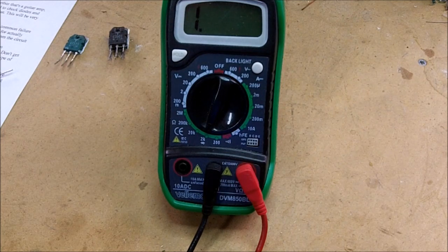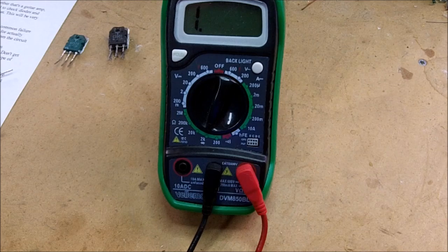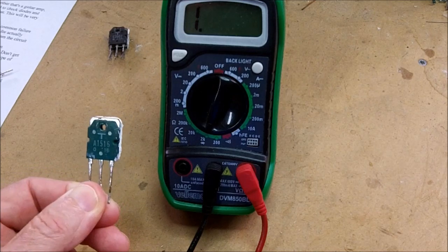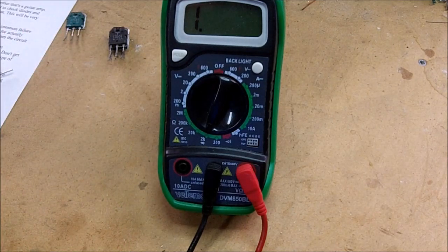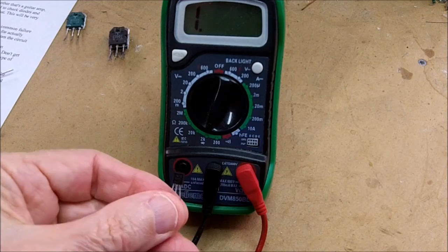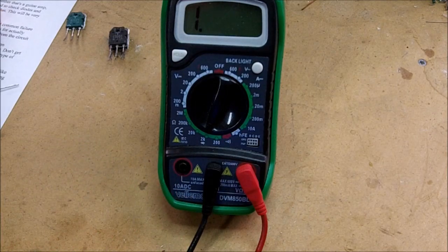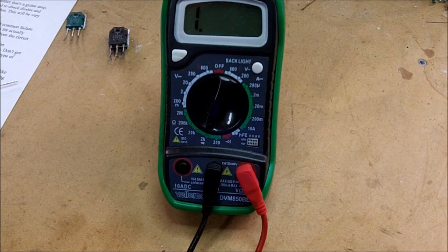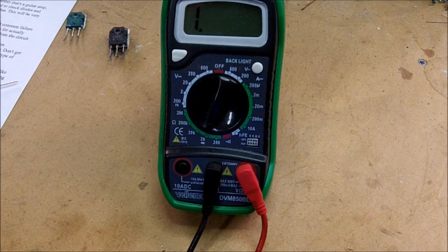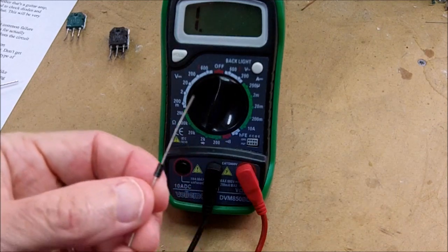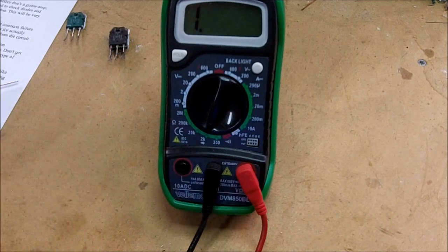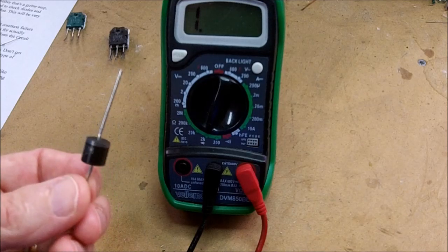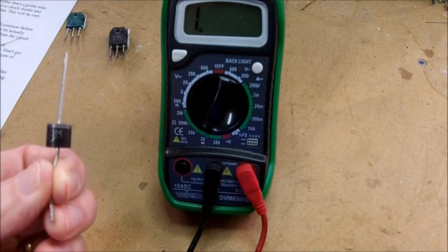Now transistors come in several type cases, that is sizes. They can be in a fairly large case like this one, or they might be in a fairly tiny case like this one. And usually the size of the case is kind of indicative of the power handling capability of the transistor. Diodes also come in different sizes. There are small ones like this one that might handle just a few amps, and then there are larger diodes like this one, which handles about six amps.